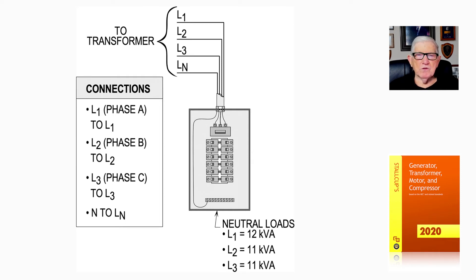And the neutral that you see in the panel board, the neutral loads: L1 you have 12 kVA that we looked at, L2 is 11 kVA, L3 is 11 kVA. So we have an unbalance of 1 kVA.